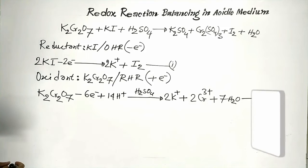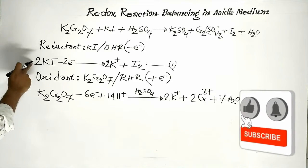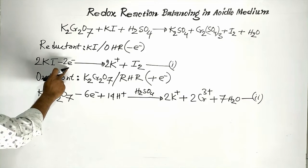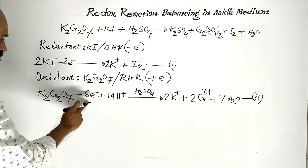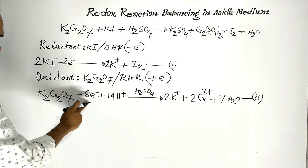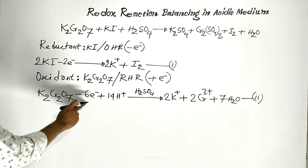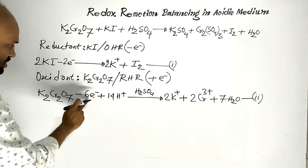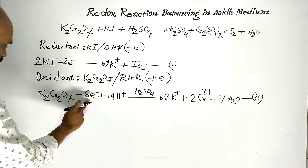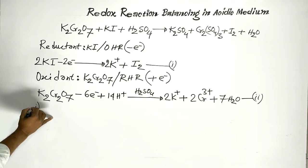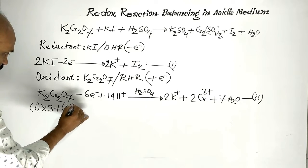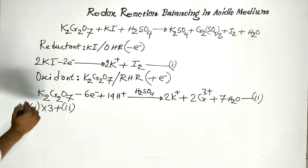Now we see that in equation one there are two electrons, but in equation two there are six electrons. To balance these numbers of electrons, equation one is multiplied by three and then added to equation two in this way: equation one times three, plus equation two.